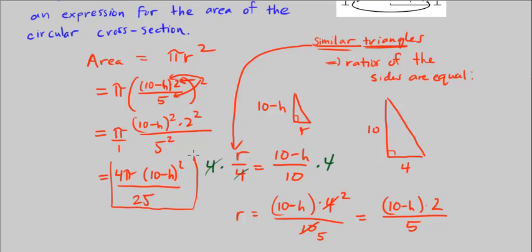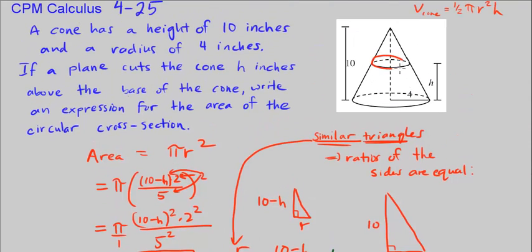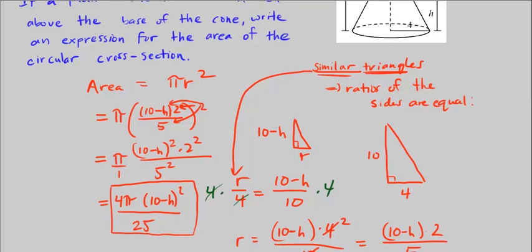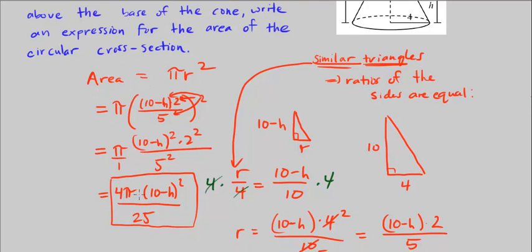So that is the area of that circle that is cut right here. So this circle right here has the area 4 pi times 10 minus h squared divided by 25.